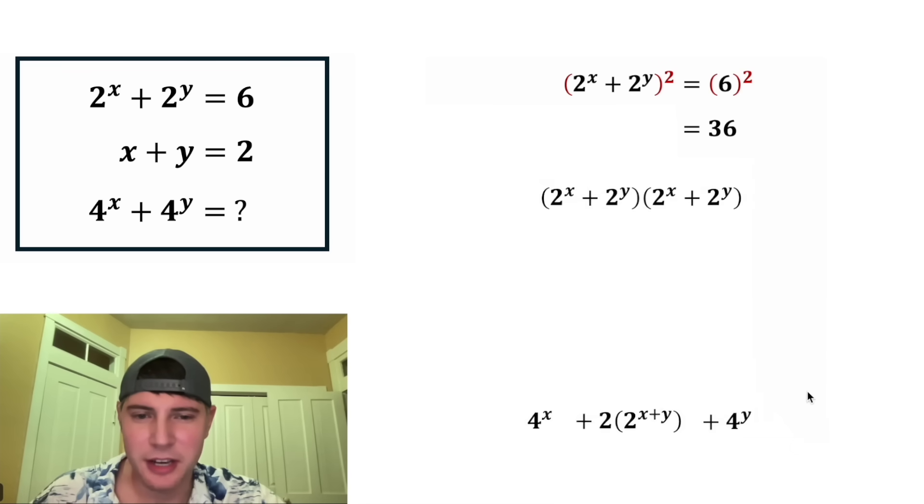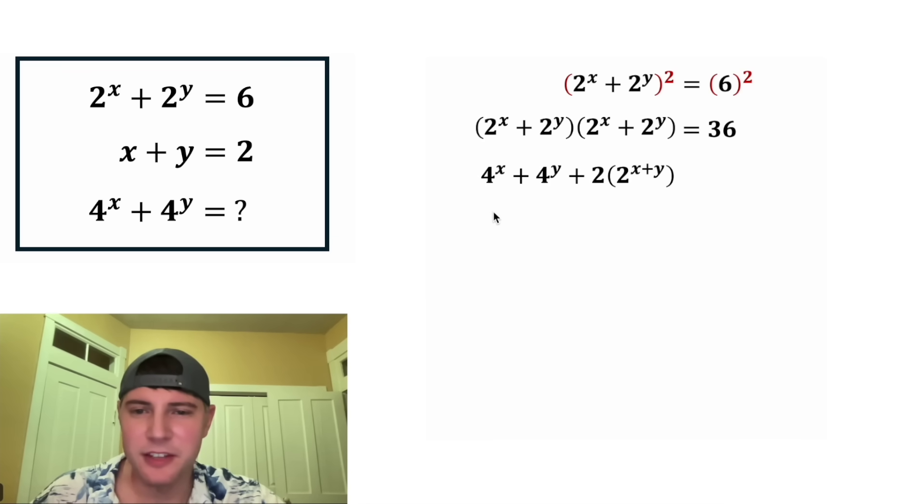Let's get rid of all this work and bring these up here. And this whole thing is still equal to 36. So what can we do next? Oh, the x plus y, we know what that is. That's equal to 2. So let's copy this down. And in the place of x plus y, let's plug in 2. So this inside of the parentheses will be 2 squared. And 2 squared is equal to 4, and 2 times 4 is equal to 8. So this whole third term is equal to 8. And let's copy down everything else.